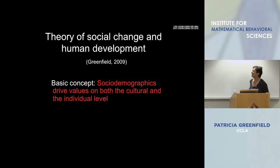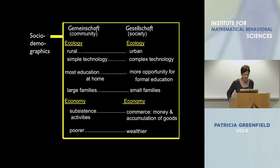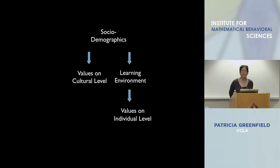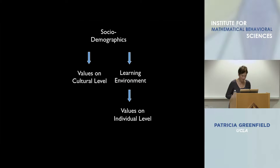The basic concept is that sociodemographics drive values on both the cultural and the individual level. This is a multi-level theory. The specific relations I'm going to be dealing with: sociodemographics influence values on the cultural level, and they also influence learning environments, and then learning environments in turn influence values on the individual level.